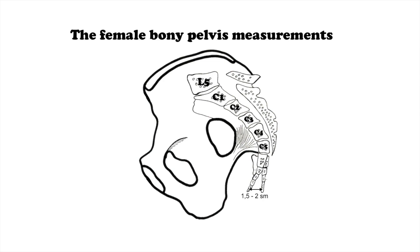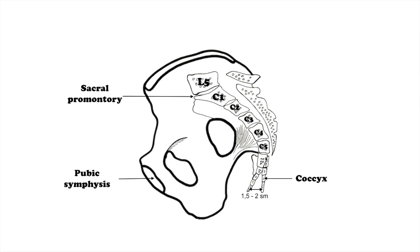The upper border of the first vertebra in the sacrum sticks out and points toward the front of the body. This protuberance is the sacral promontory, an important landmark for labor and delivery. The pubic symphysis is a secondary cartilaginous joint located between the left and right pubic bones near the midline of the body.